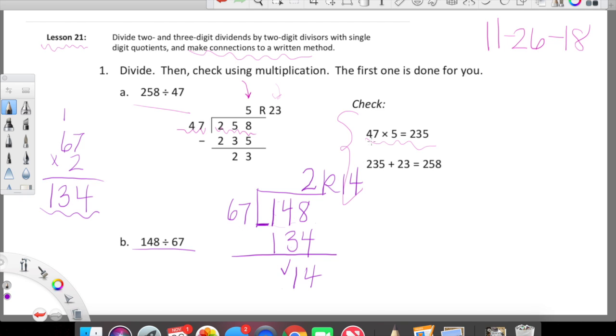We're going to check: is 14 smaller than 67? Yes. All we have to do, mathematicians, is just rewrite the remainder up top, so our quotient is 2 with a remainder of 14. We're going to use this check step. Here's how we're going to use the check step: we're going to take our divisor, which is 67, and we're going to multiply it by our quotient, which is 2.